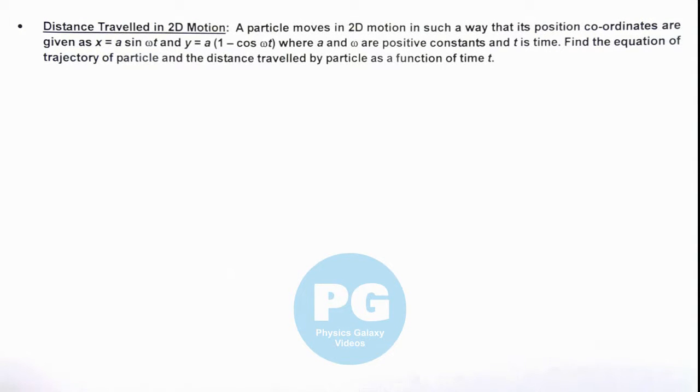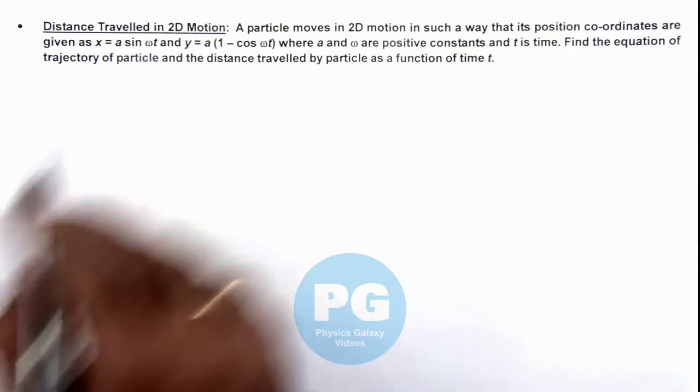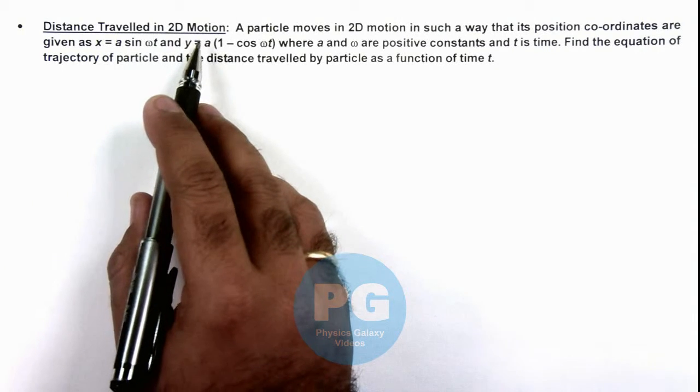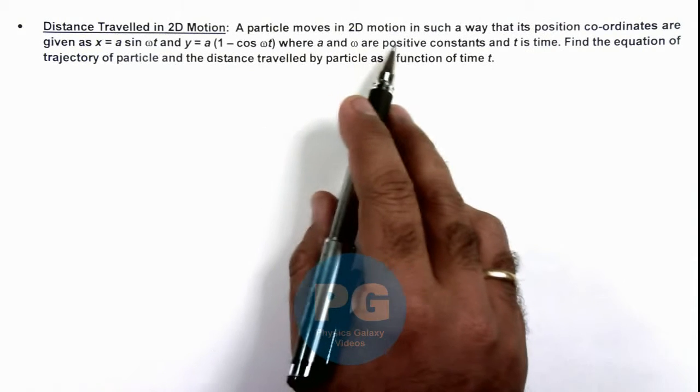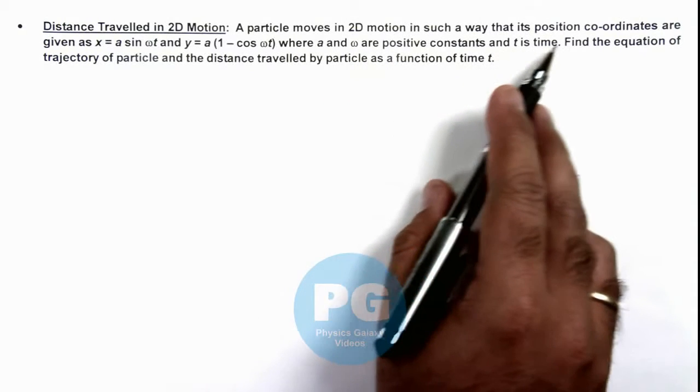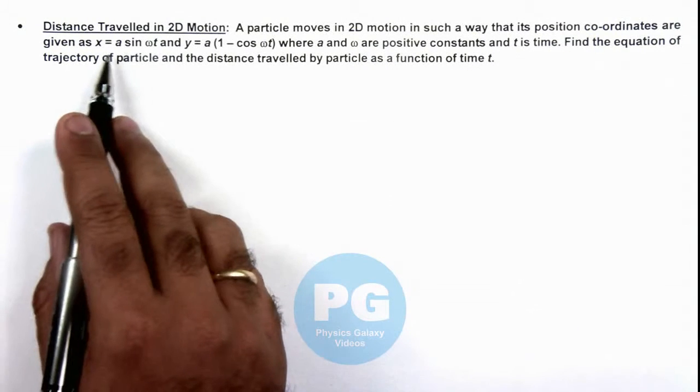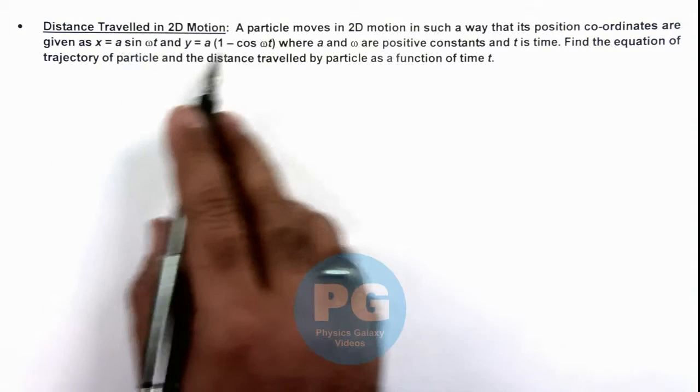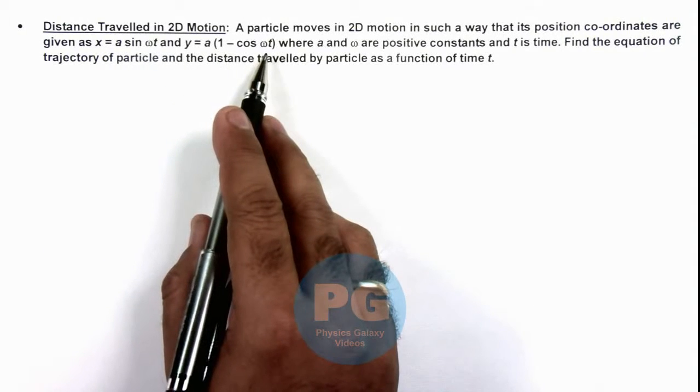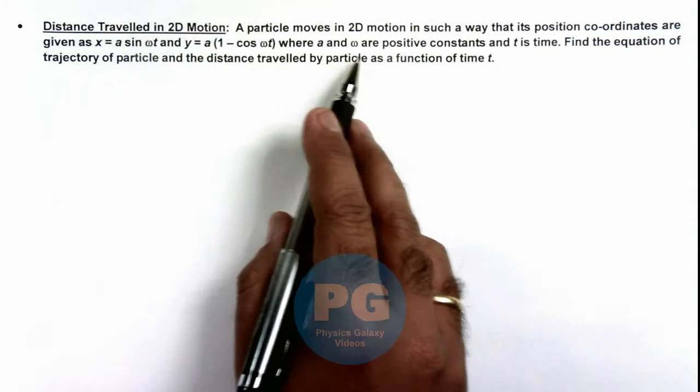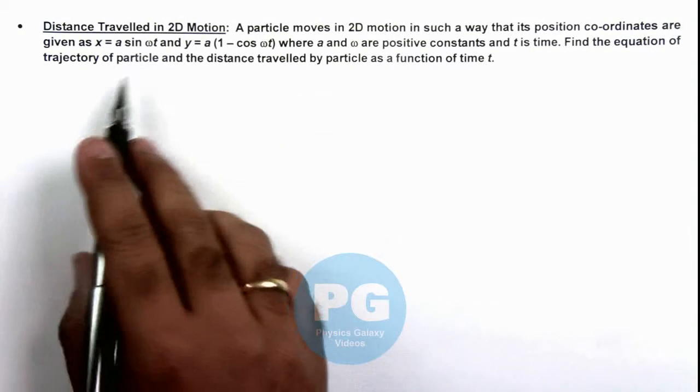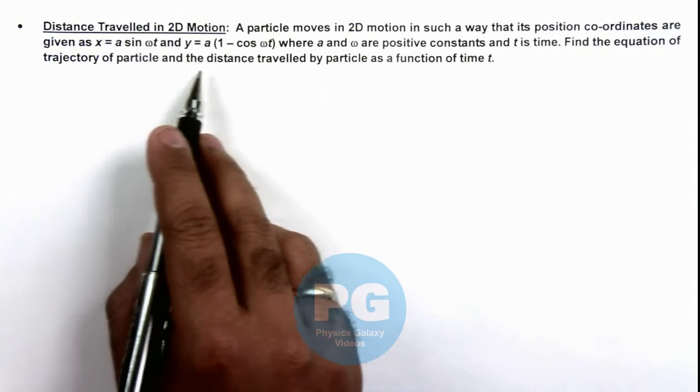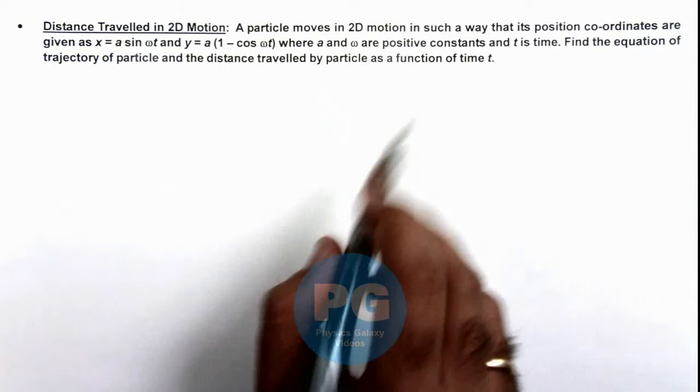In this illustration we'll discuss the distance travelled by a particle in 2 dimensional motion. If we are given that a particle moves in 2D motion in such a way that its position coordinates are given as x = a sin(ωt) and y = a(1 - cos(ωt)), where a and ω are positive constants and t is time. We are required to find the equation of trajectory of particle and the distance travelled by particle as a function of time.